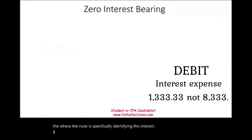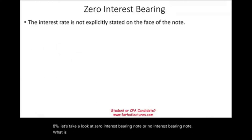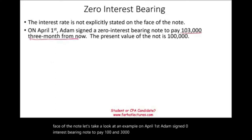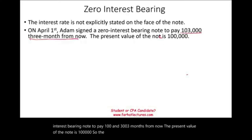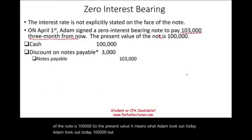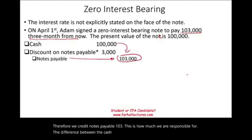Now let's look at a zero-interest-bearing note. On April 1st, Adam signed a zero-interest-bearing note to pay $103,000 three months from now. The present value of the note is $100,000 — meaning Adam took out $100,000 today but will pay back $103,000. We credit notes payable $103,000 and debit cash $100,000. The difference of $3,000 is recorded as a debit to discount on notes payable.